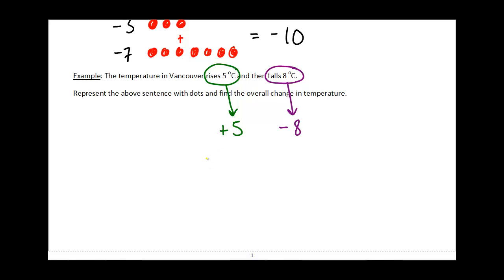My positive five would be one, two, three, four, five of these yellow dots. So there's my plus five.